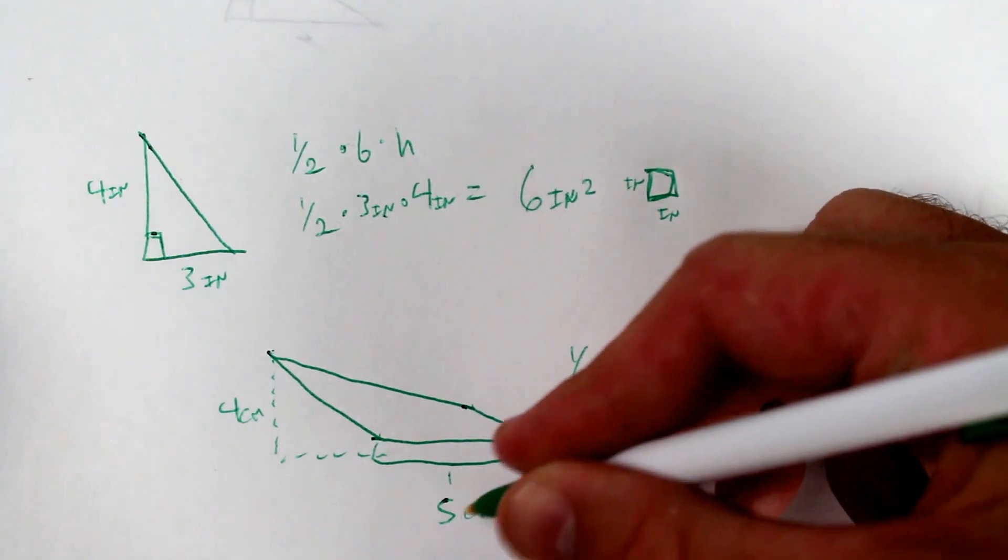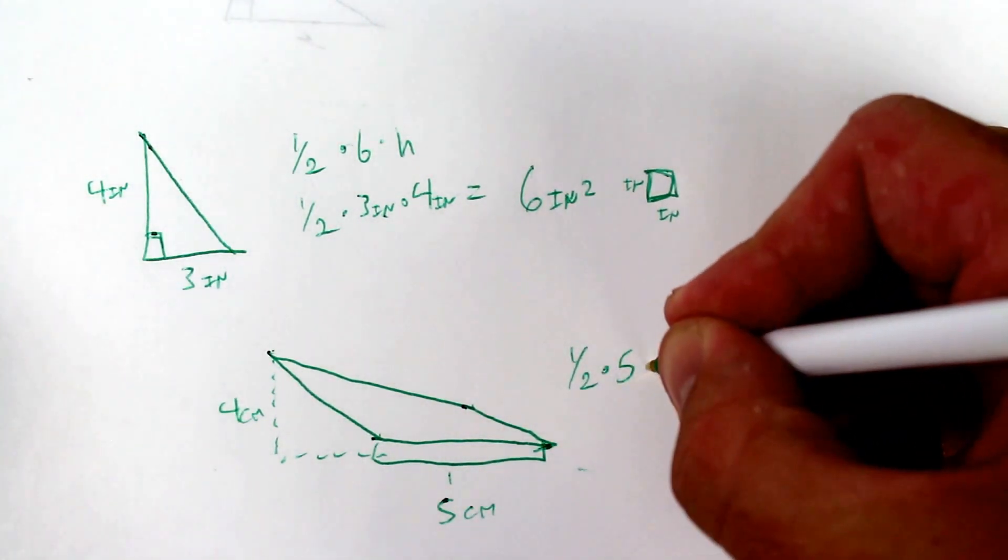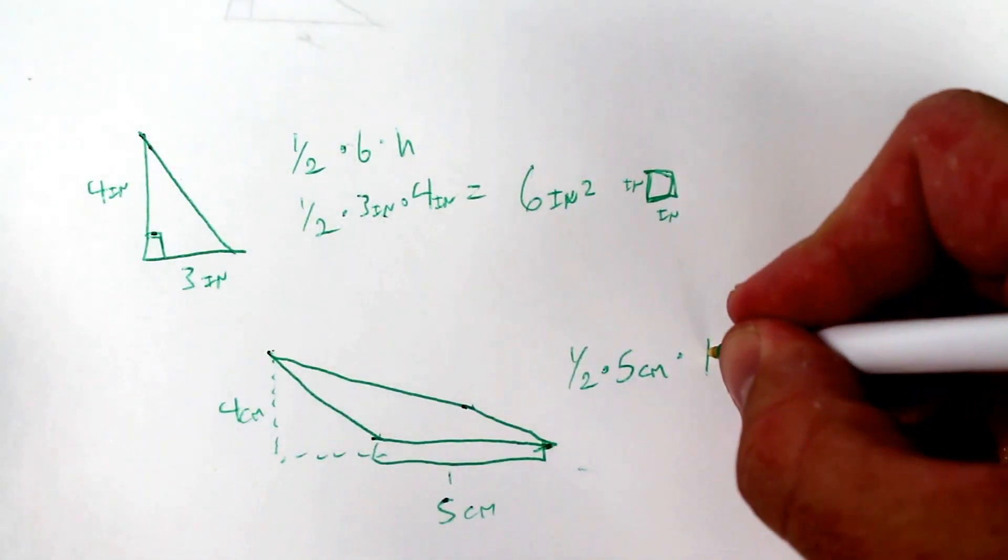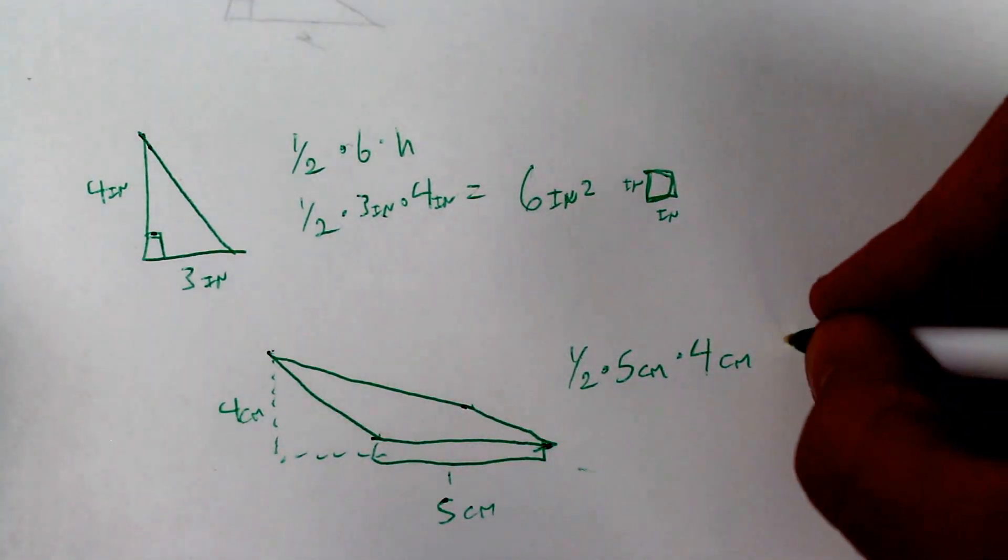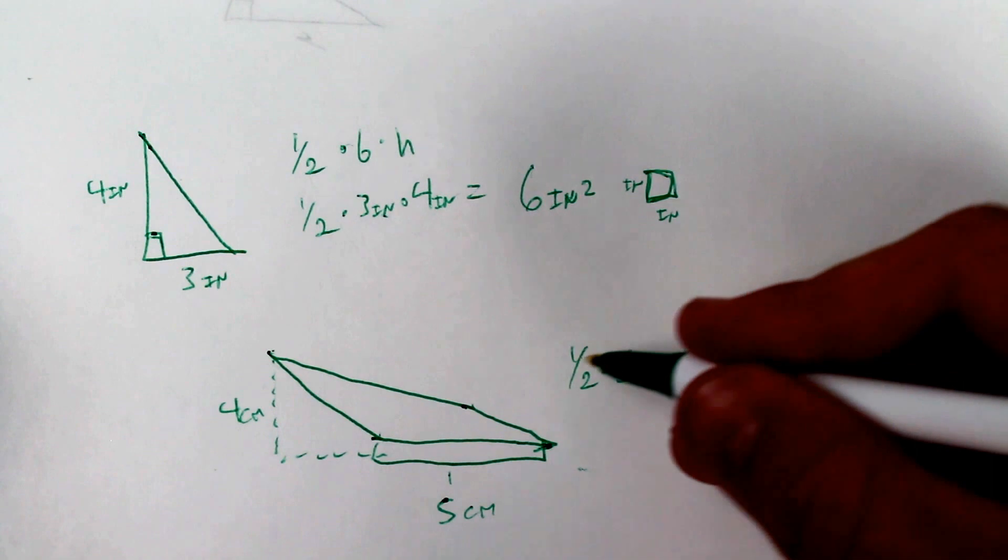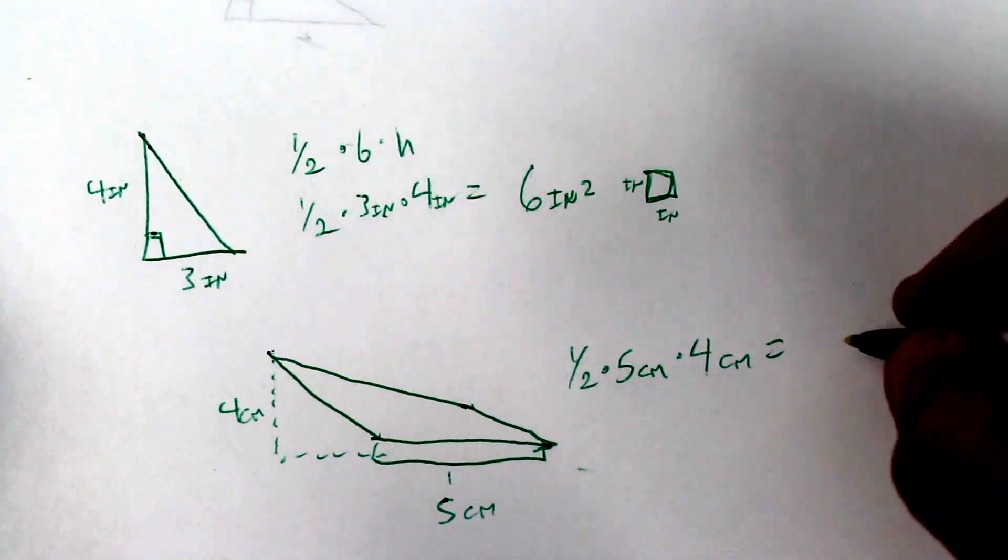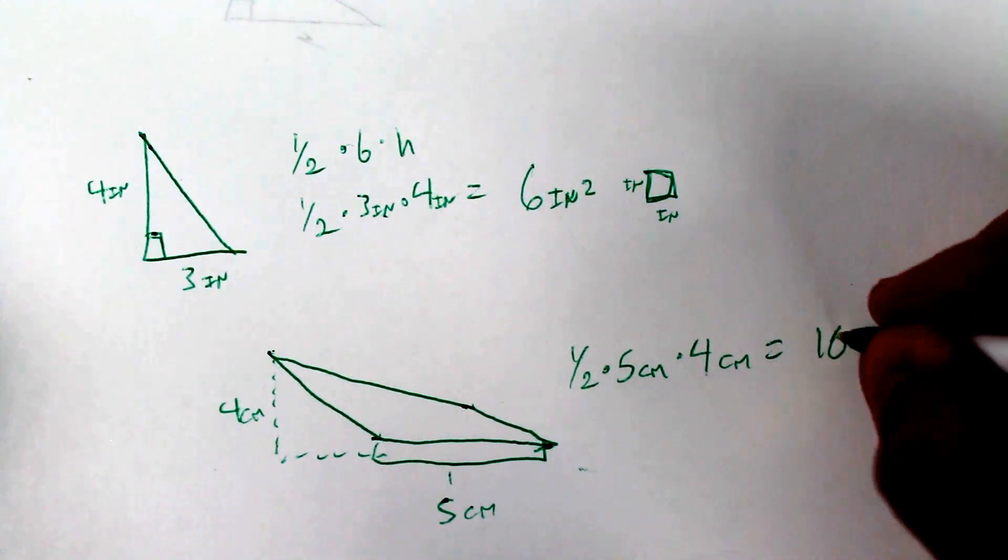So you have one half times the base, which is five centimeters, times the height, which is four centimeters. Five times four is 20 times one half, which will give you 10. That'll be centimeters squared.